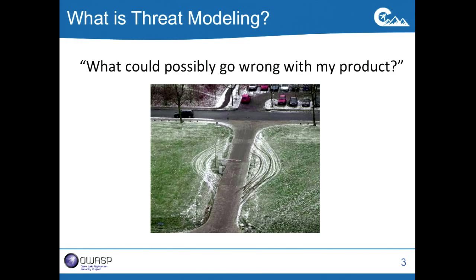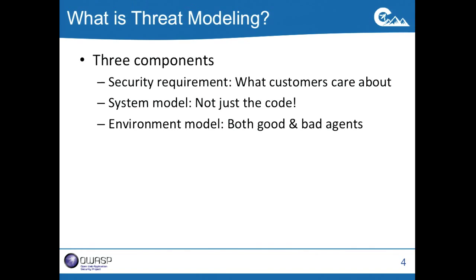Now let's try to make this more precise. As a developer, when you're thinking about security, you're often working with different kinds of artifacts. You might not write all this down explicitly in a document, but you're going to have them in your head at least. The first thing you need is some kind of security requirement — basically what your customers want, something that your customers expect your system to satisfy. For example, if you're building a healthcare app, then your customers are going to expect your system to keep their medical records private.